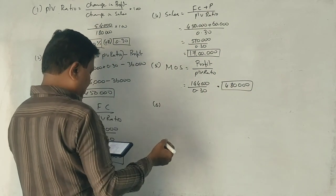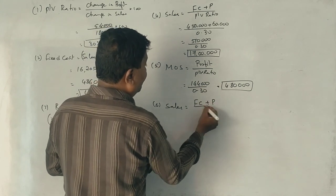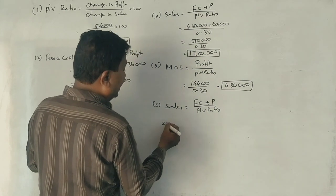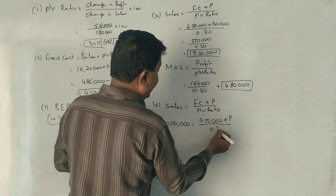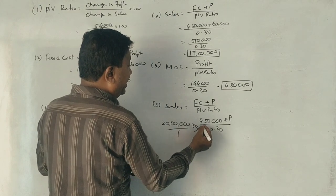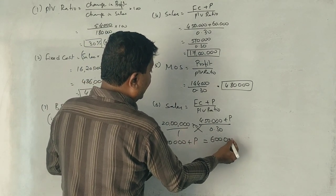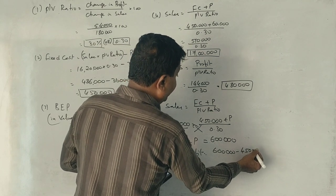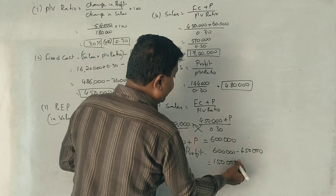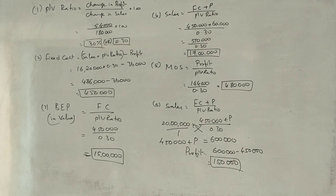Last question, profit when sales is 20,00,000. Sales equals fixed cost plus profit divided by P/V ratio. 20,00,000 equals 6,00,000 minus 4,50,000 gives 1,50,000. So profit is 1,50,000.